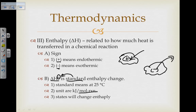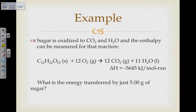The units for delta H are in kilojoules per mole of reaction. Much like specific heat, if the states change — if you have ice versus liquid water versus water vapor — the enthalpy changes, so it's specific to the substance in that particular state of matter.